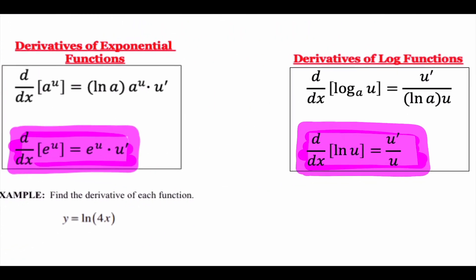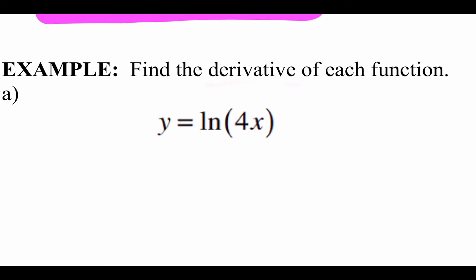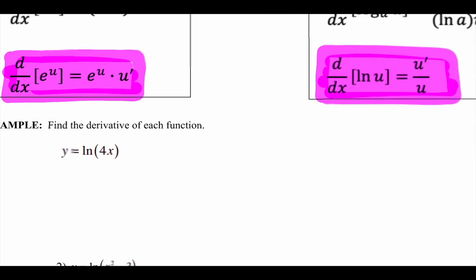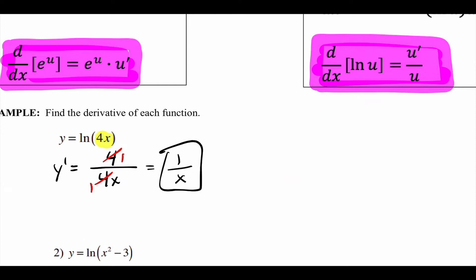Natural log looks intimidating, but once you identify it and apply your steps it's not bad. For example, finding y' of ln(4x): u is 4x, the derivative of 4x is just 4 on top, and 4x repeats on the bottom. I can reduce because 4 goes into 4 once, so you get 1 over x.